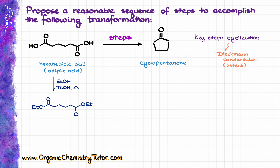For the purposes of the Dieckmann condensation, we are going to analyze one of our alpha positions — we have one alpha position over here and a second alpha position over there. Since my molecule is completely symmetrical, it really doesn't matter which alpha position I consider. If I number my molecule one through six and go with the alpha position on carbon number two, in the course of the Dieckmann condensation I'm going to end up making a new carbon-carbon bond between that alpha position, carbon number two, and carbon number six.